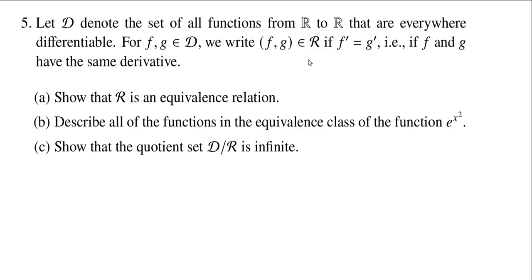In the first part of this problem we want to show that this gives us an equivalence relation, which should be straightforward — it essentially comes down to the fact that equality is an equivalence relation. For 5a, to show we have an equivalence relation we have three conditions to check: reflexivity, symmetry, and transitivity. Reflexivity is always the odd duck: it's the only one where you don't make an assumption about something already being in the relation.